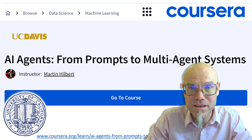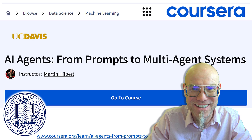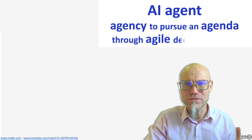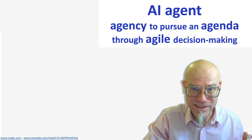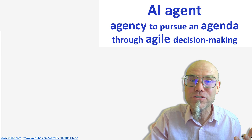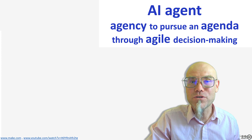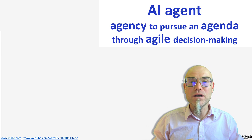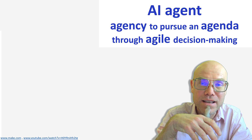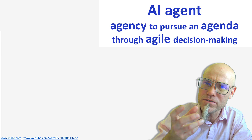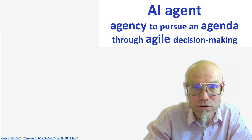AI agents have certainly been the talk of town recently. So what is that about? When an AI agent has agency to pursue an agenda through agile decision-making, all of these words — agent, agency, agenda, agile — come from the Latin word agere, meaning to act, to do in the real world. And that's what this is all about: an artificial intelligence that can interact with the real world in an agile, autonomous way and confront an ever-changing environment.